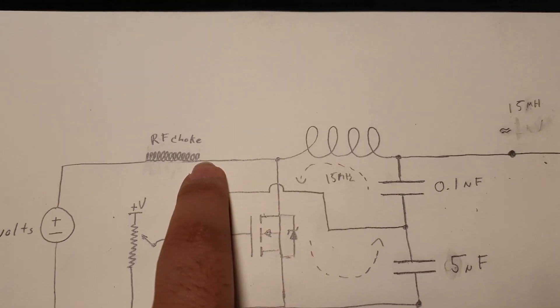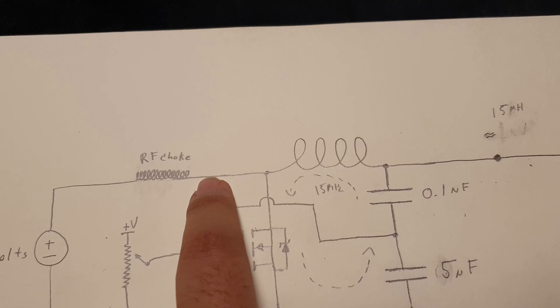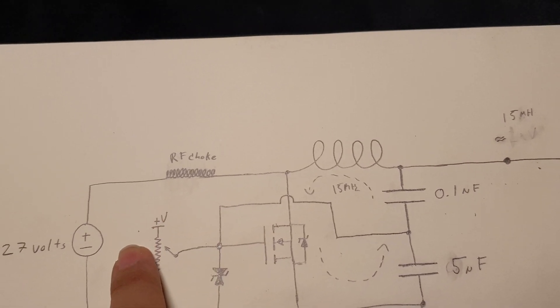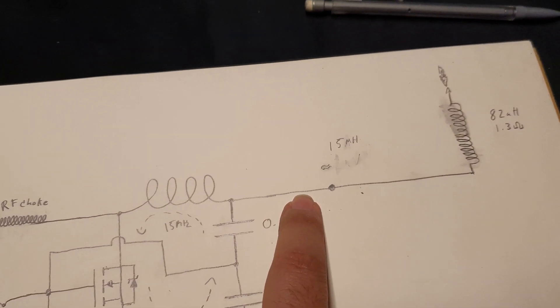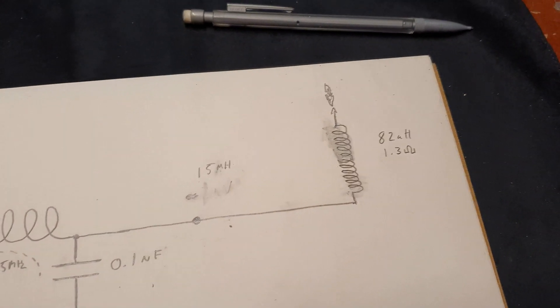And we have here an RF choke that's just to block the high frequency AC from going back into the power source. And all the power is going to be coupled into the base of our mini Tesla coil here.